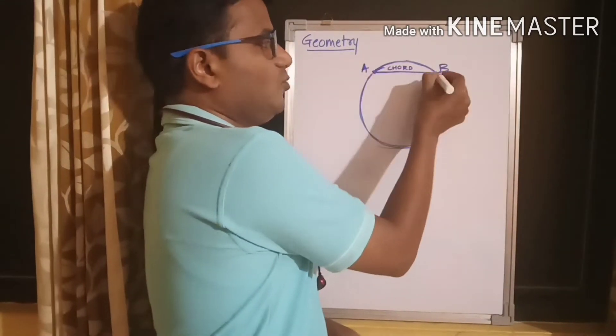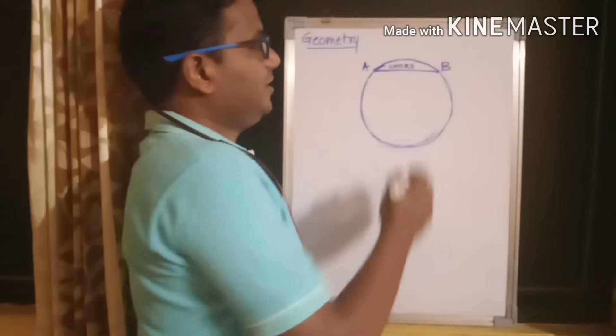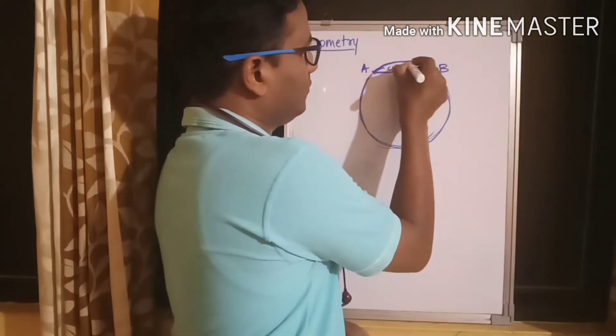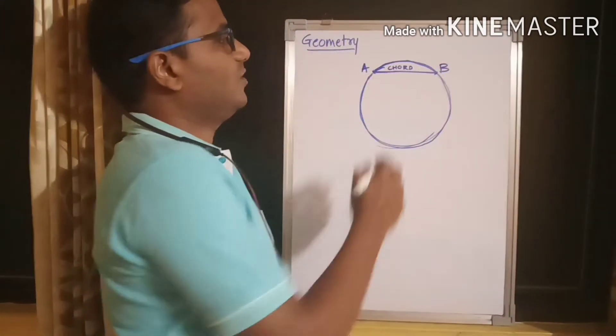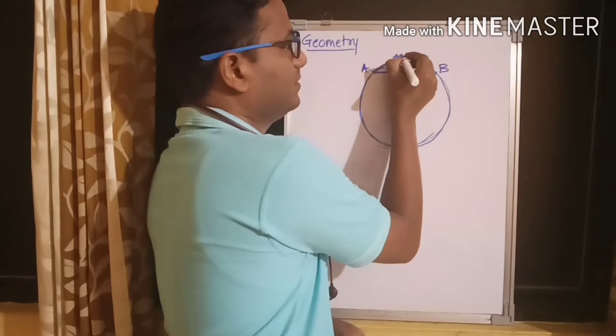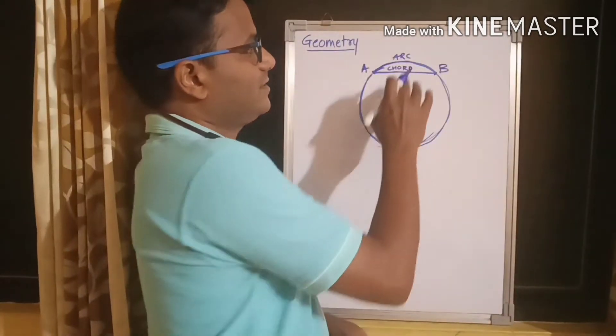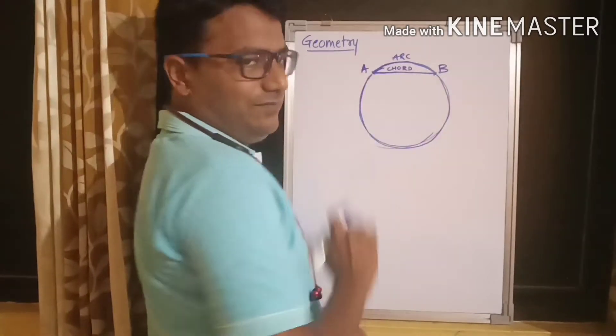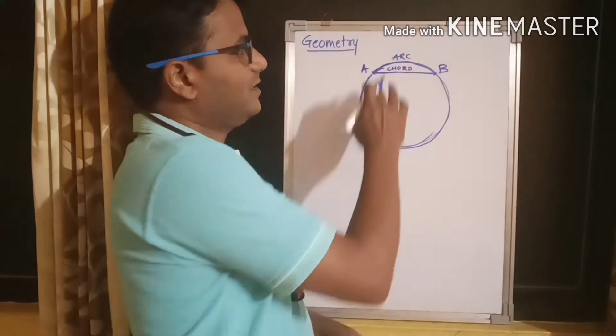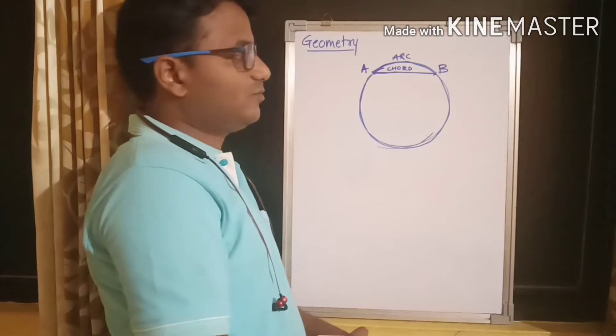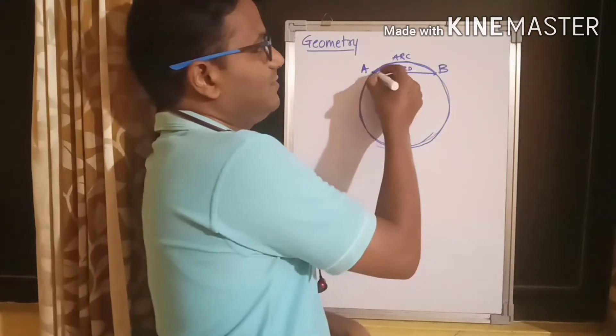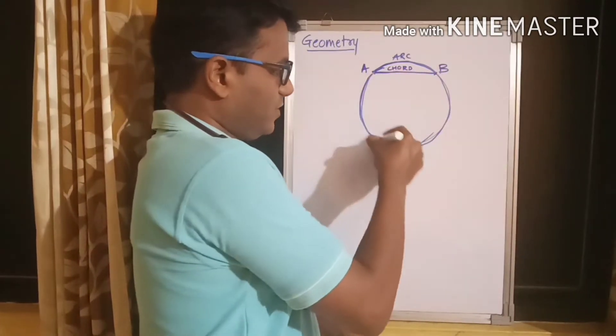And the same two points when joined along the periphery of the circle is called as arc. Okay, now you can see that these two points are same but are connected by three different paths, by three different possibilities. Now, this one is also arc and this one is also arc.